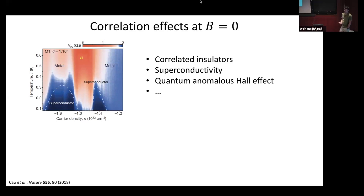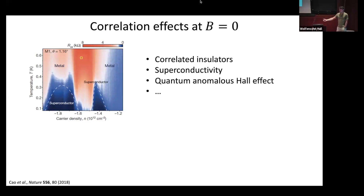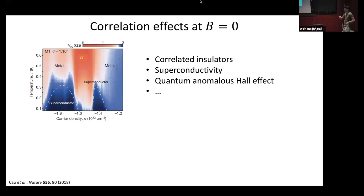This corresponds to half-filling one of the flat bands, and at face value looks very similar to the high-temperature cuprate phase diagram — though this similarity may be a red herring, except to say that in both cases electronic interactions are very strong. In other samples there are also reports of the quantum anomalous Hall effect. Details vary from sample to sample in terms of which correlated insulating states appear and exactly where the superconductivity appears, depending on strain and specific twist angle, and even today it's not fully resolved what the intrinsic behavior is.